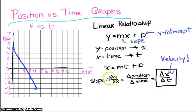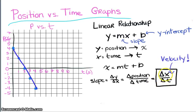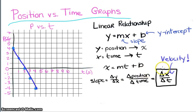Now let's talk about the slope. The slope of any graph is change in Y divided by change in X — so in this case, change in position over change in time. When I put that into symbols, ΔX divided by ΔT, I recognize that as velocity. So the slope of a position versus time graph gives you the average velocity.